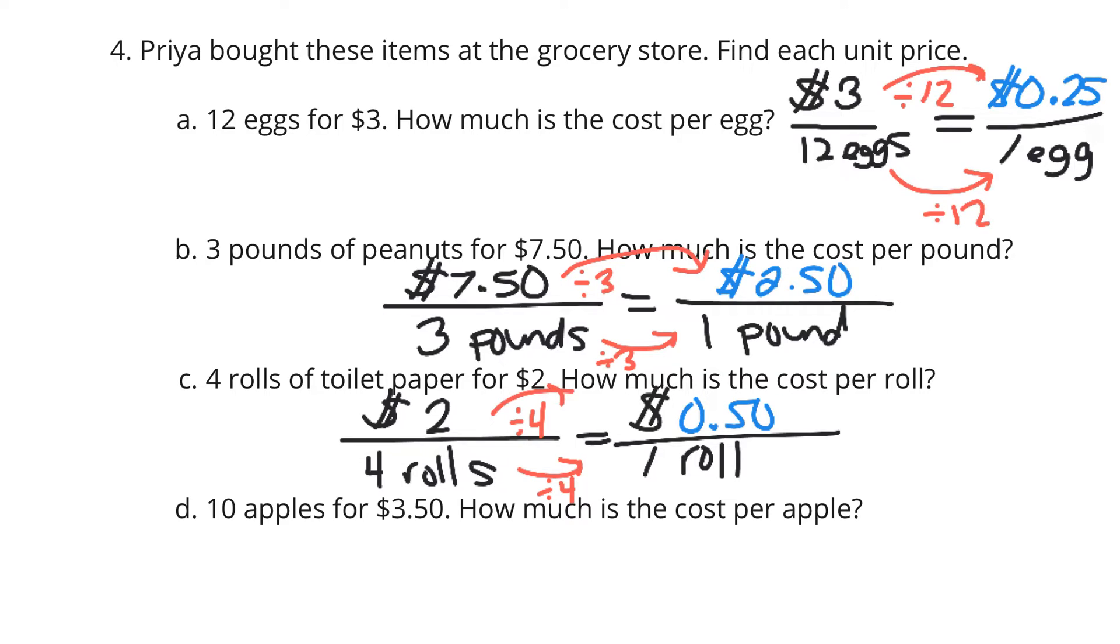And again, if you're doing 4 divided by 2 just because you're seeing big number divided by small number, you're not thinking through the question. You need to think through this and go, all right, $2, 4 rolls. Oh, how much 1 roll costs? Well, if I divide this by 4, because 4 rolls divided by 4 gives me the 1 roll. So $2 divided by 4 is going to get me the $0.50.